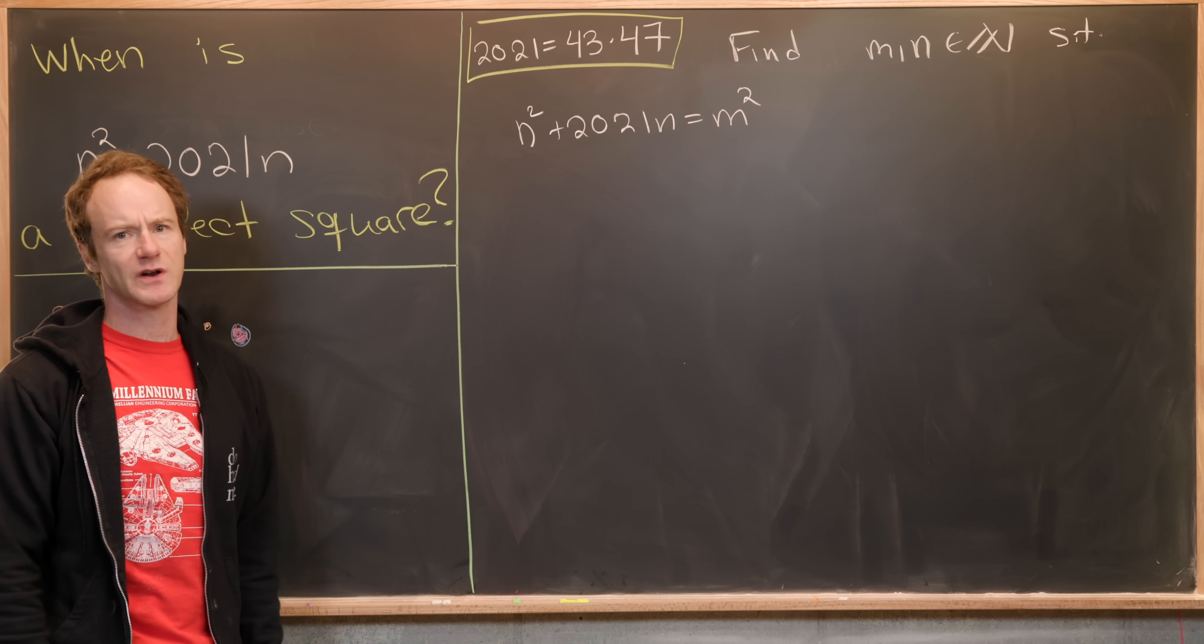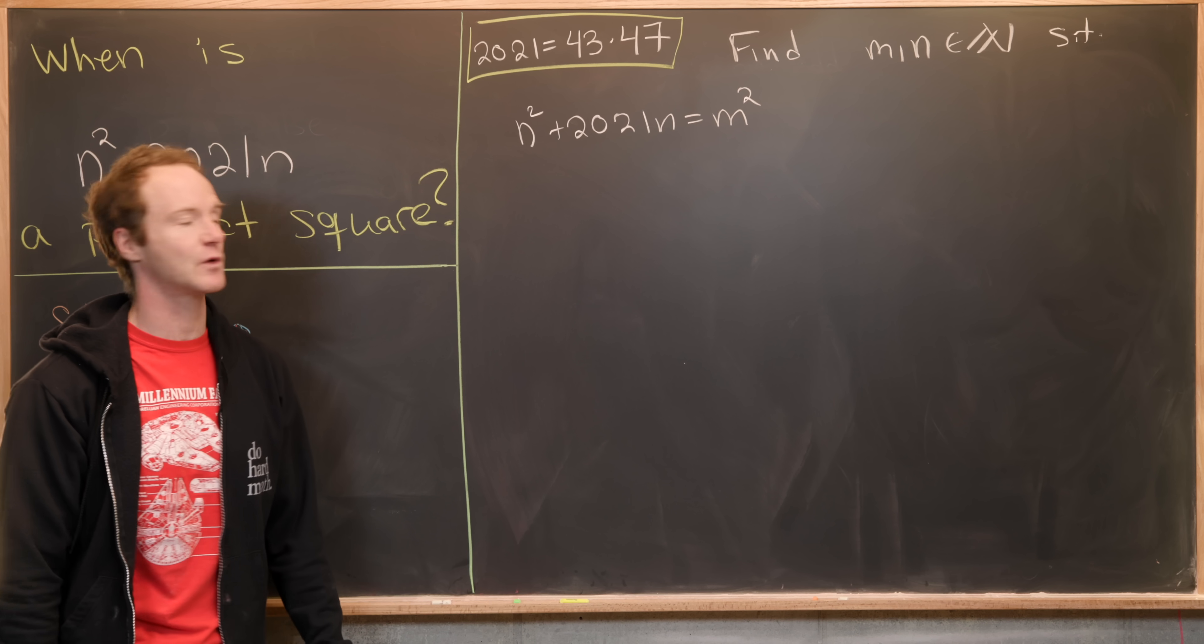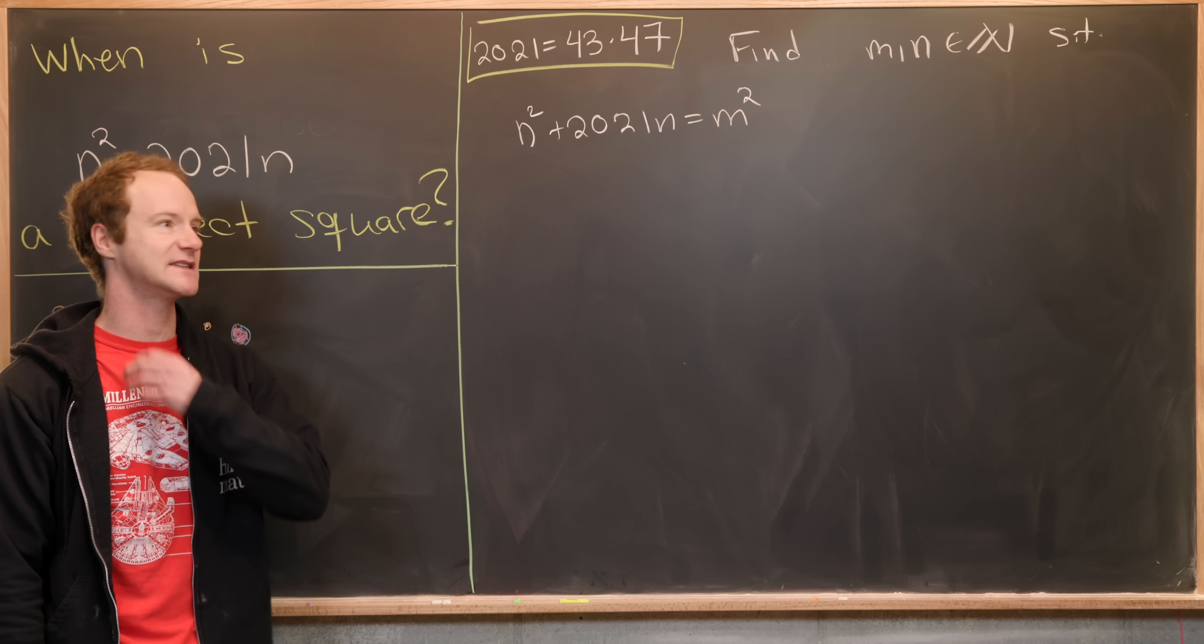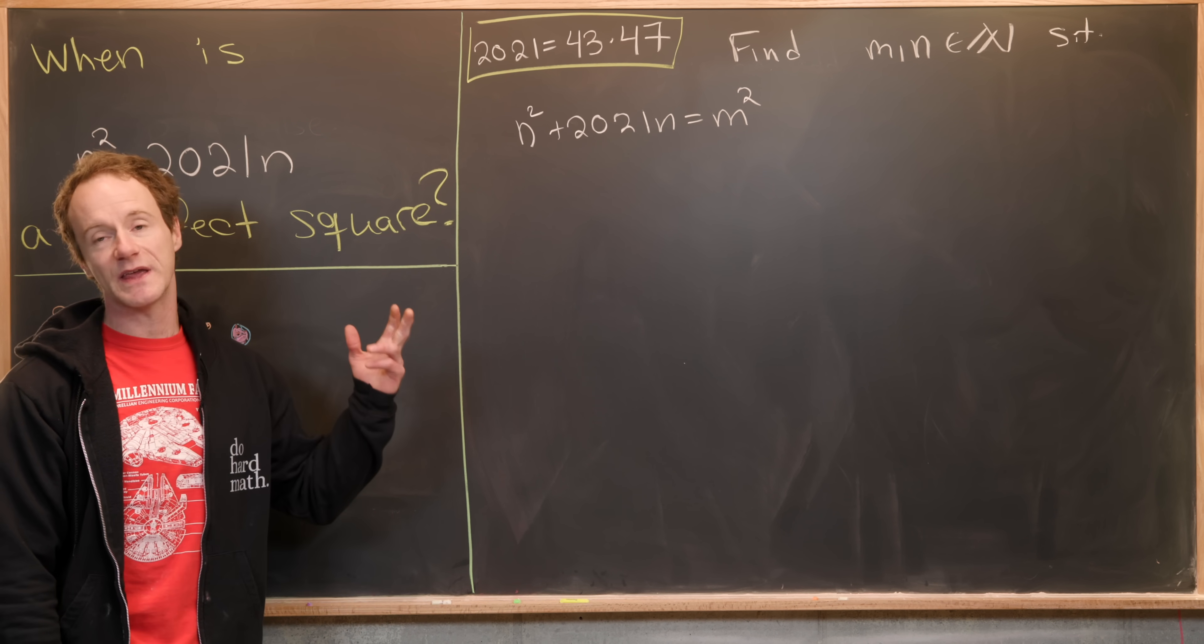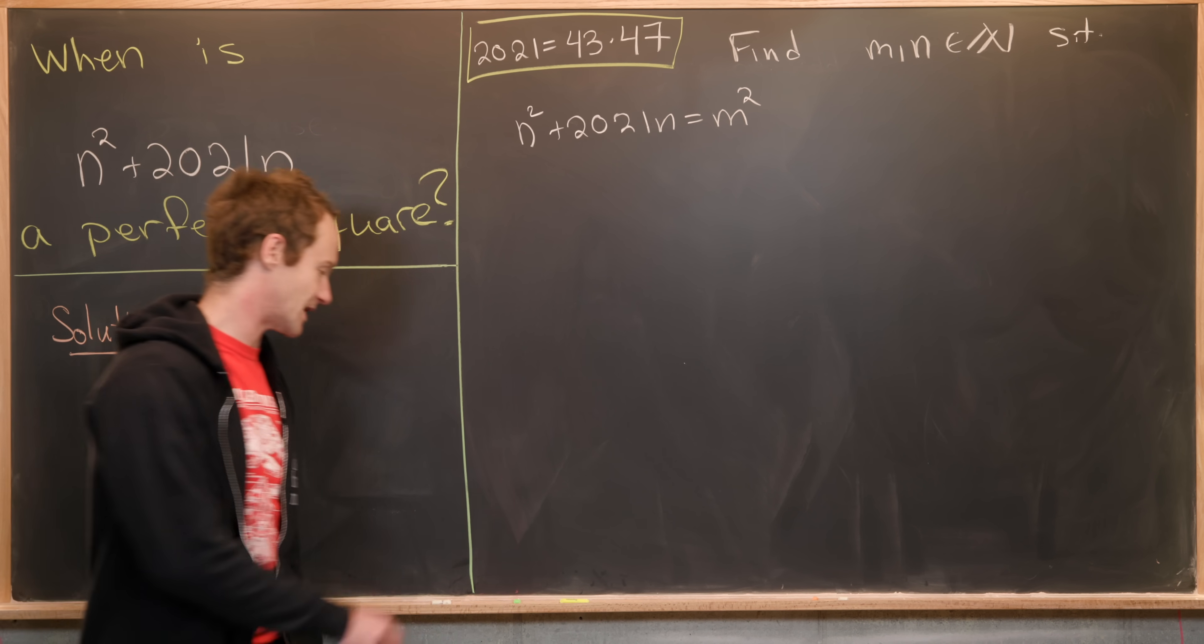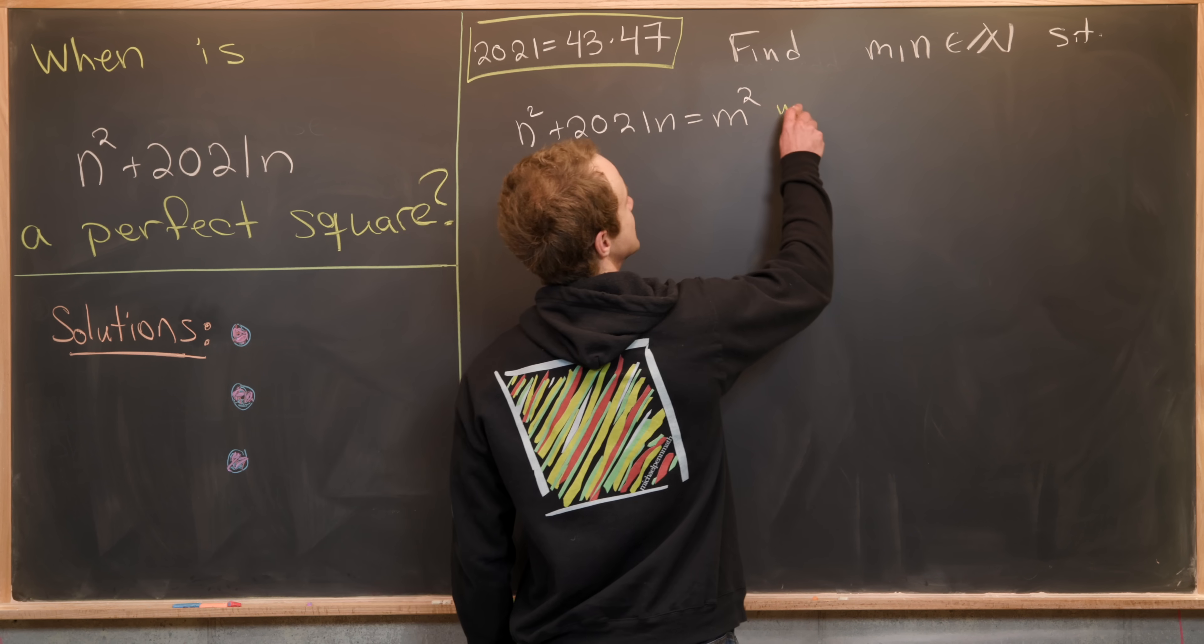So generally, if you were to complete the square, you would perhaps take half of 2021 and then square it. But then you're in the rational numbers, and that's not so good here. So we can counteract that by multiplying both sides of this equation by four.